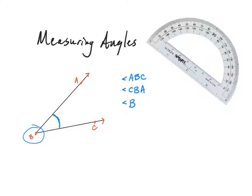Angle ABC is less than 90 degrees, which means it is an acute angle. I want to make sure I remember that information when I go to measure my angle so that when I get an angle measure, I can confirm that the measure is reasonable.